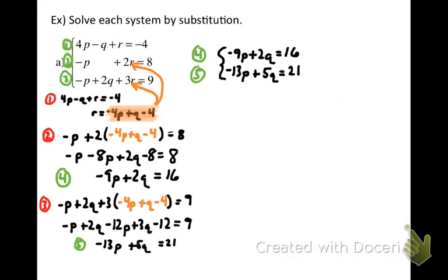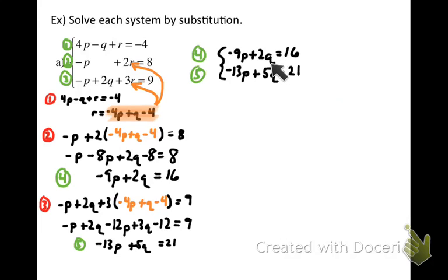As soon as you've got two new equations without that variable, compare them into a new system. You've hit the easy part because now you know how to solve a two-variable system. Even though the directions say to solve by substitution, once you've successfully reduced it to a two-variable system, use any method you want. By far, elimination would be easier here because the P's and Q's aren't easily isolated without getting fractions. I think I'd like to eliminate the Q's — two and five both go into ten, so let's multiply the top equation by negative five and the bottom equation by positive two.